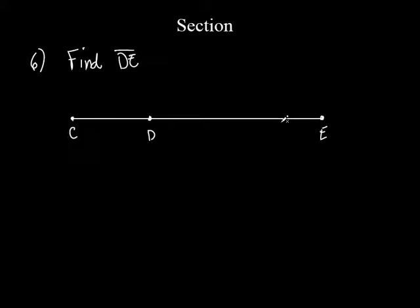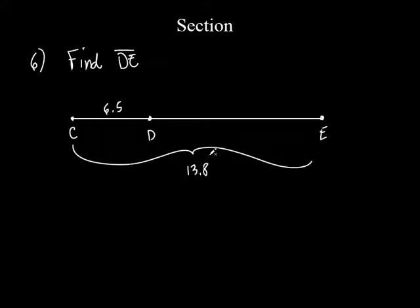This is what I would do — I promise you. I would do this if I saw this problem in front of me. They tell you CD is 6.5, so from there to there is 6.5. And then it says CE — the length of CE is 13.8. Is CE just part of it? No, it's the whole thing.